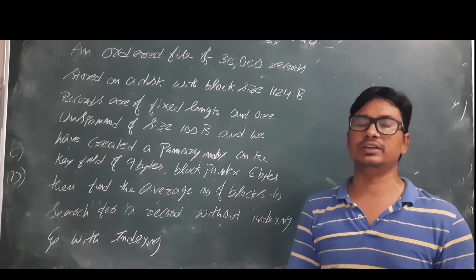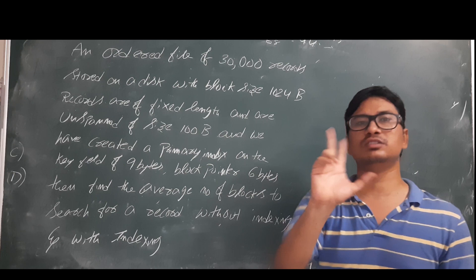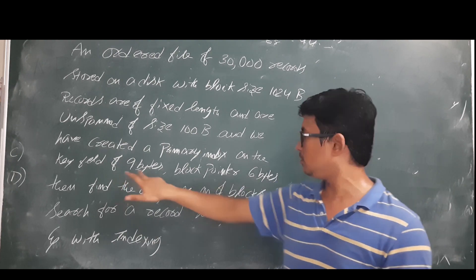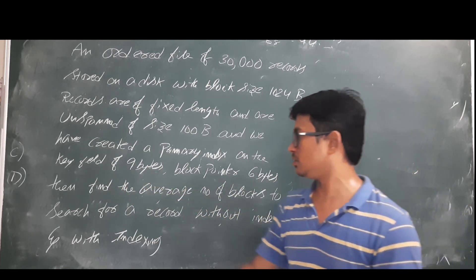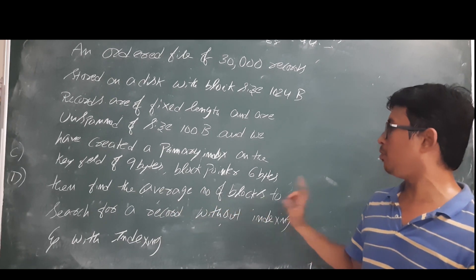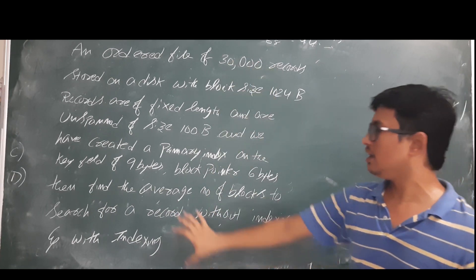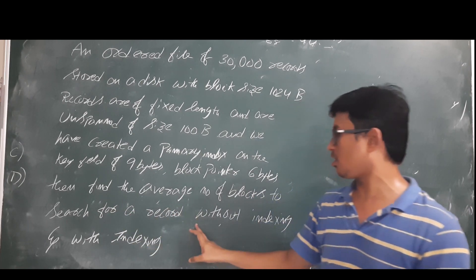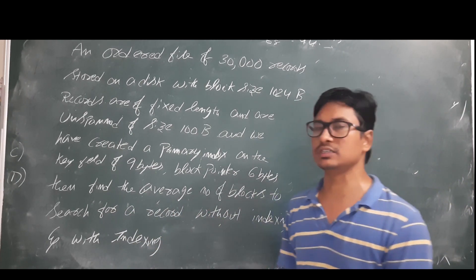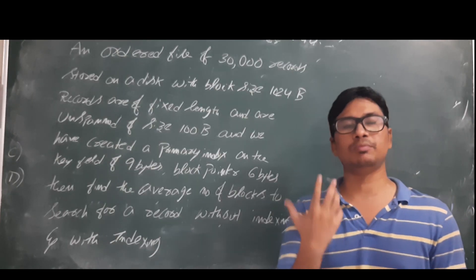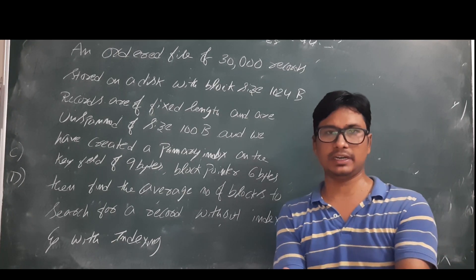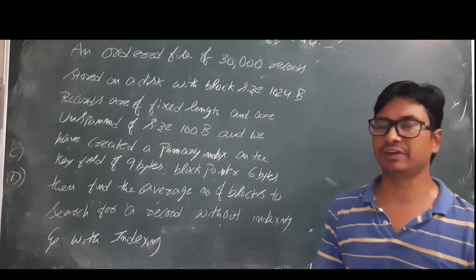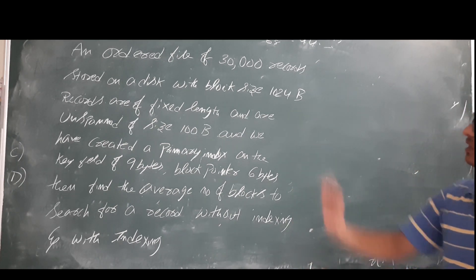Any indexing will consist of two fields: one is the key value and the other is the block pointer. They have given the key value as 9 bytes and block pointer as 6 bytes. Now they are asking us to find the average number of block accesses to search for a record without indexing and with indexing.